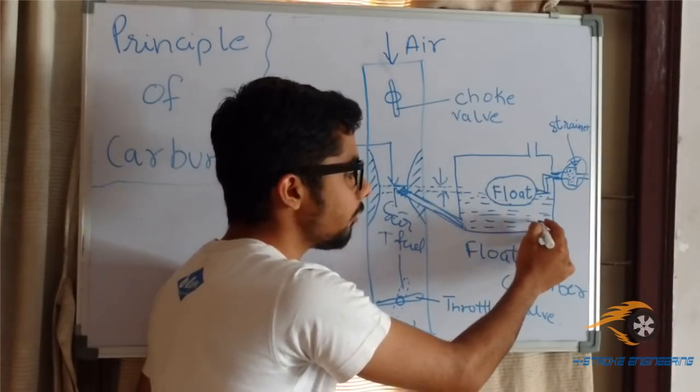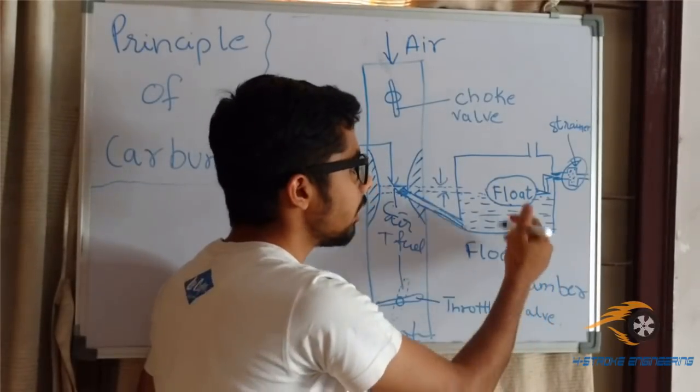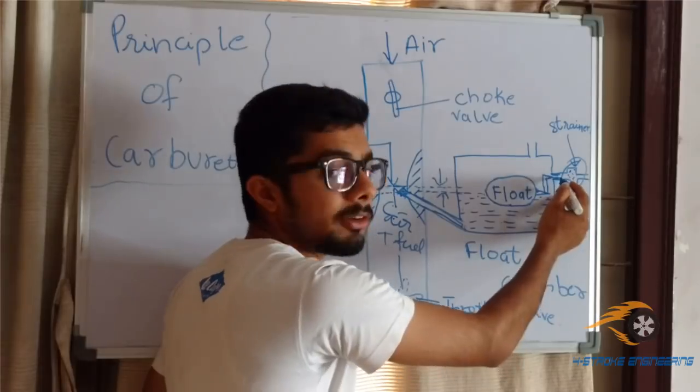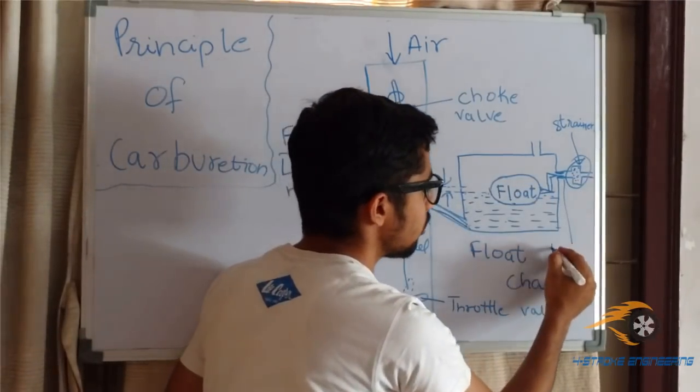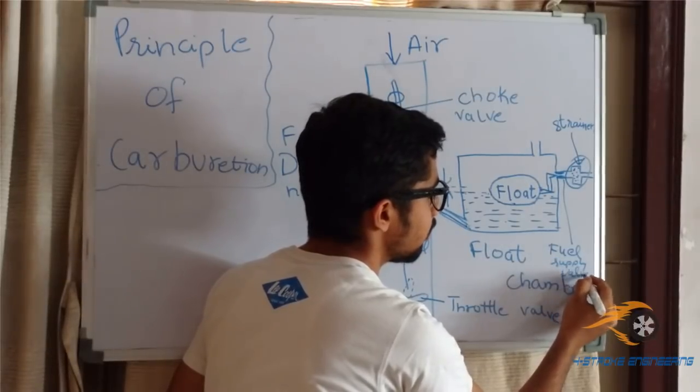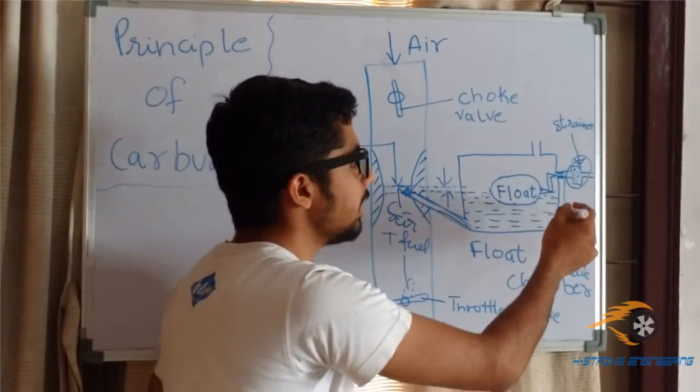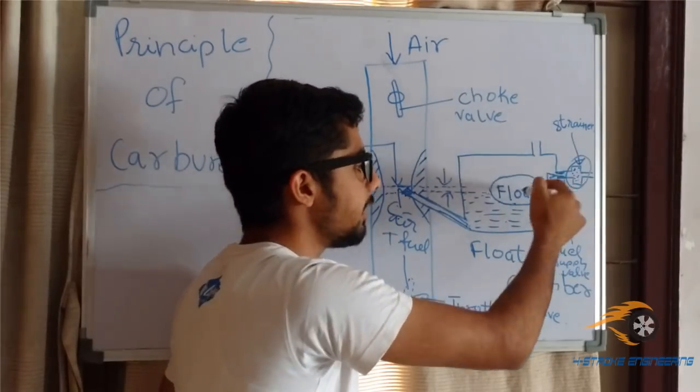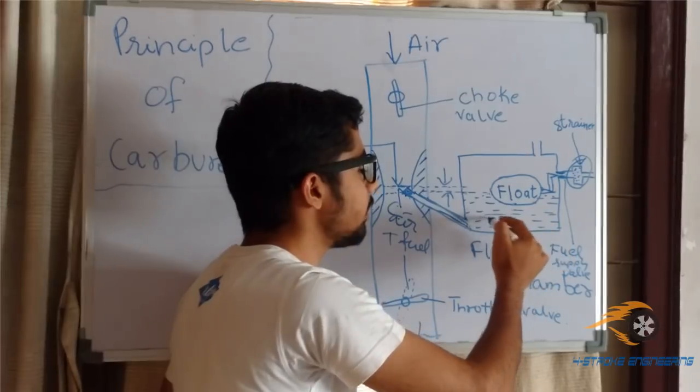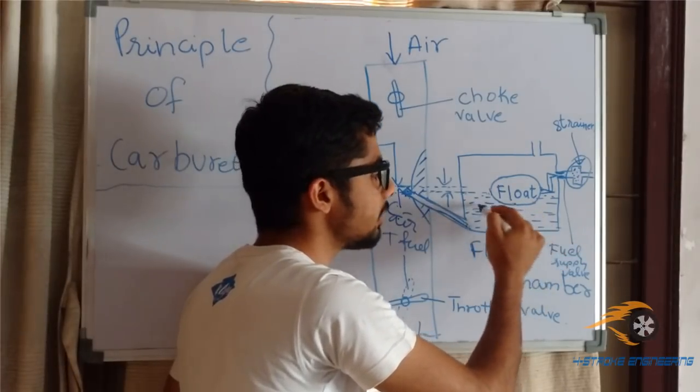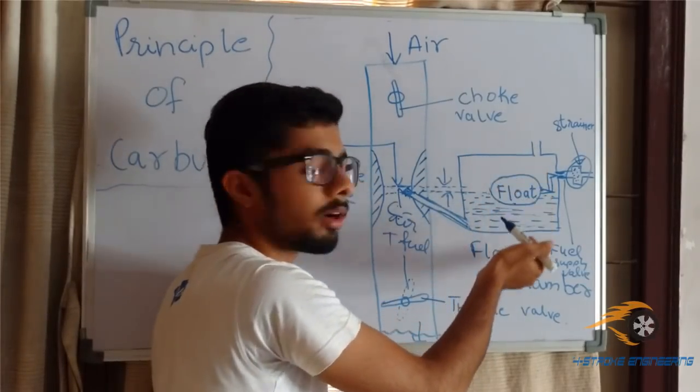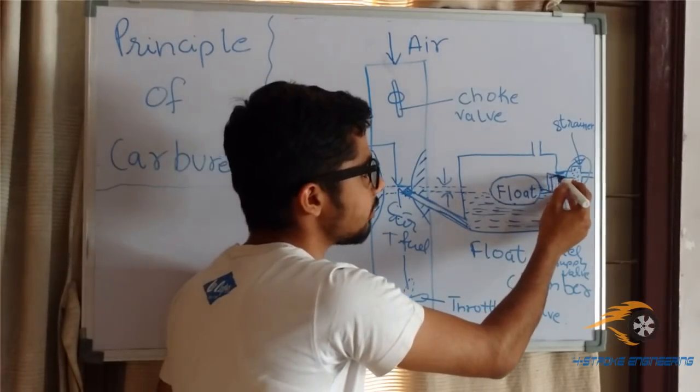Now when the fuel level decreases, the float tends to lower down. When it lowers down, this is the valve, this is the fuel supply valve. This valve tends to open. As a result, the fuel from the fuel tank enters the float chamber. When the fuel enters the float chamber, the float chamber again gets filled with fuel. As a result, the float again rises up and this valve gets closed again.